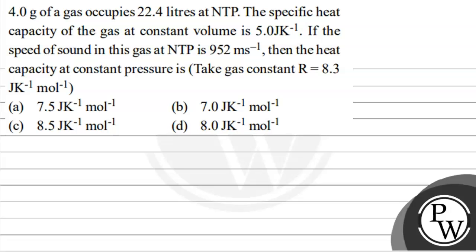The question is: 4 grams of a gas occupies 22.4 liters at NTP. The specific heat capacity of the gas at constant volume is 5 Joules per Kelvin. If the speed of sound in this gas at NTP is 952 meters per second, then the heat capacity at constant pressure is?